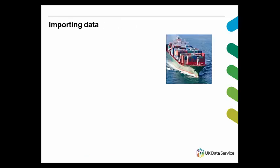Once we have set the working directory and have a better understanding of data types and structures, we can finally start bringing data into R for analysis. R can read almost any format, but we need to make sure R will be able to read the data. There are a few packages used for importing data — for instance, the packages haven, foreign, and readr — so you can install them separately.